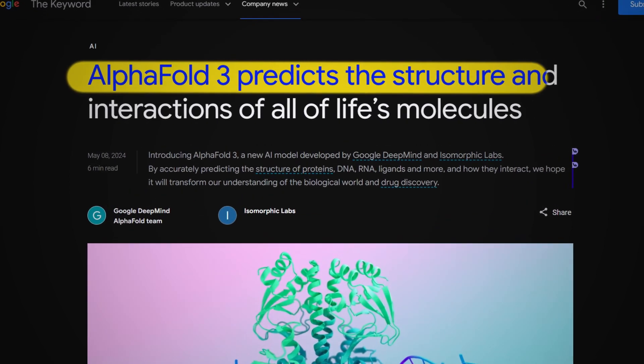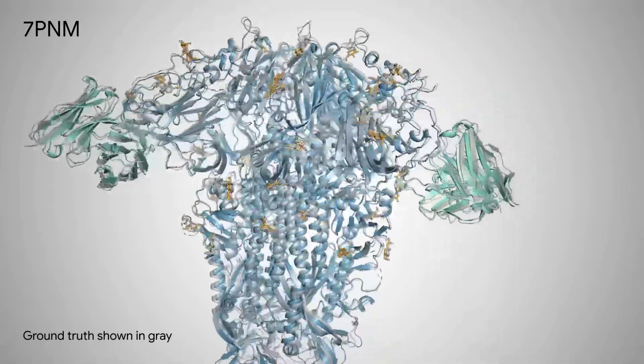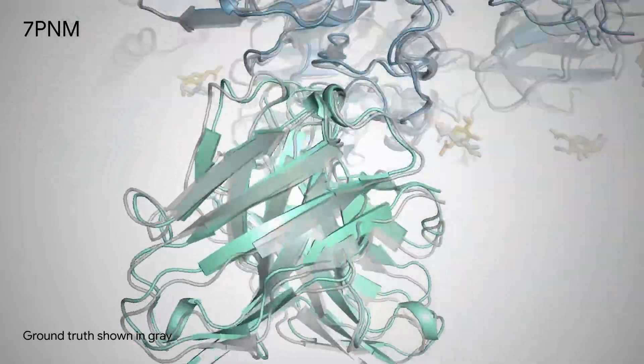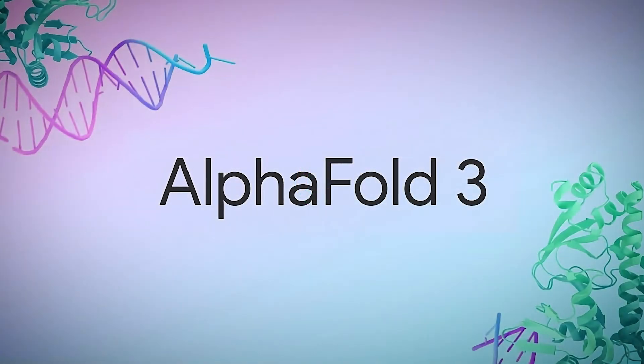Imagine being able to accurately predict the intricate shapes and interactions of biological molecules like proteins, DNA, and RNA. That's what the brilliant minds at Google DeepMind have achieved with their groundbreaking new AI system, AlphaFold3.